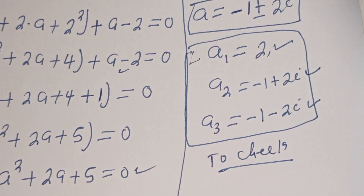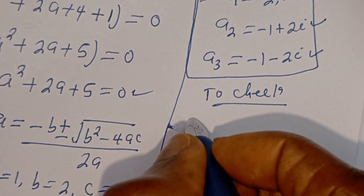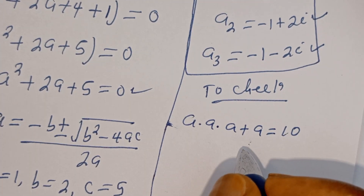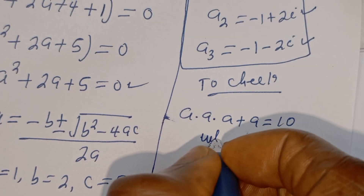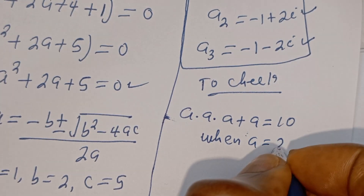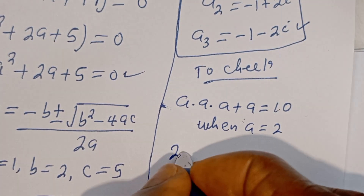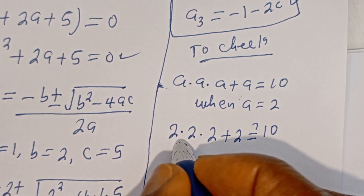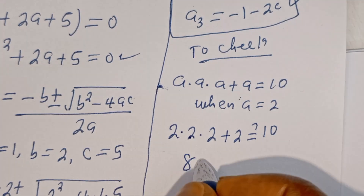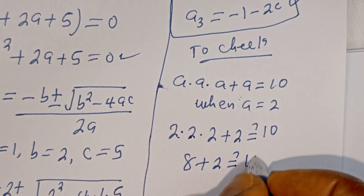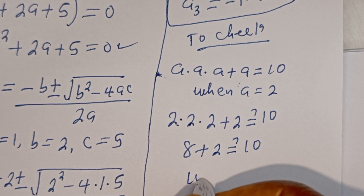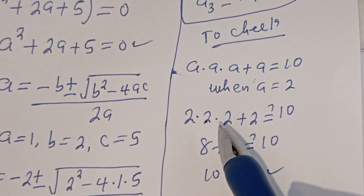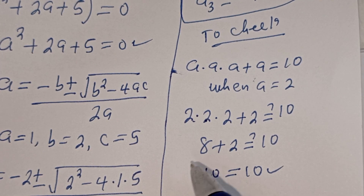Let's check to confirm. When A equals 2, we have 2 times 2 times 2 plus 2, which must equal 10. That gives 2 times 2 equals 4, times 2 equals 8, plus 2 equals 10. This is true at A equals 2. I hope you enjoyed the video — thank you for watching, please like, share, comment, and subscribe. Bye.